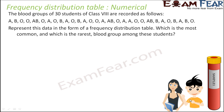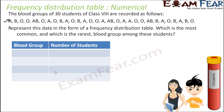The next question: the blood groups of 30 students of class 8 are recorded as A, B, B, O, O, A, B, O, A, B, O, A... We will represent this data in the form of a frequency distribution table and find which is the most common and which is the rarest blood group. Since blood groups are categories and not numbers, there is no scope for creating class intervals, so we will create an ungrouped frequency distribution table.